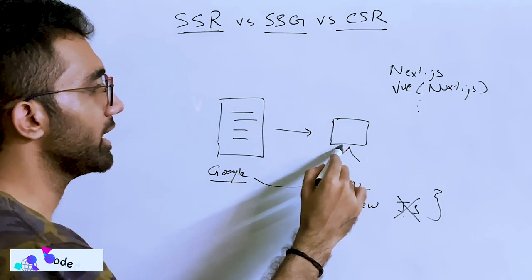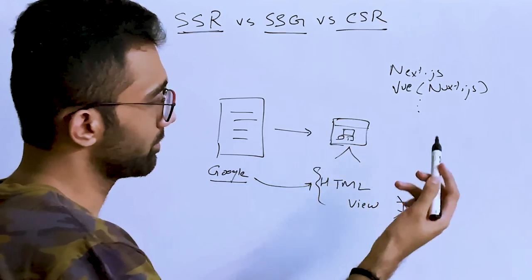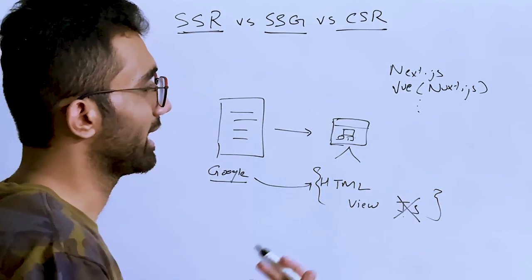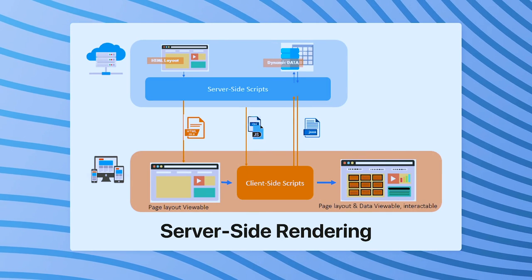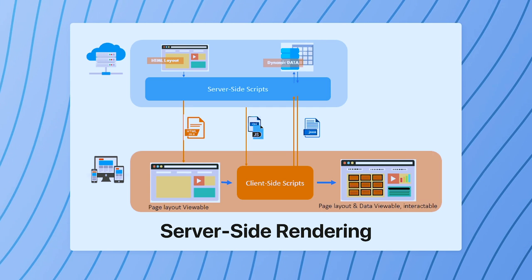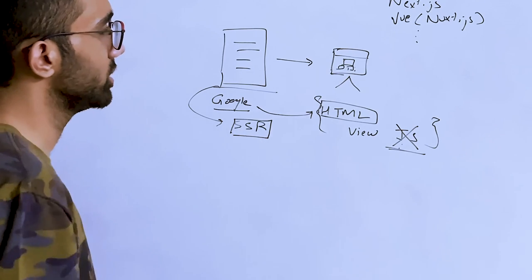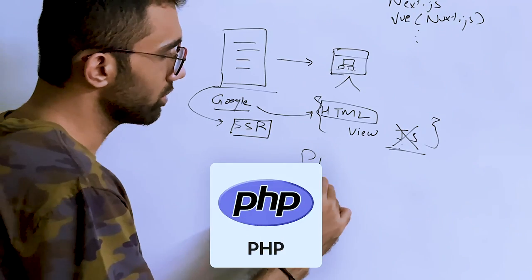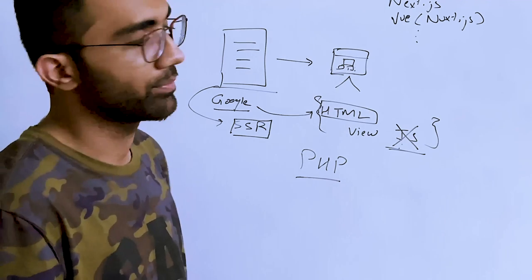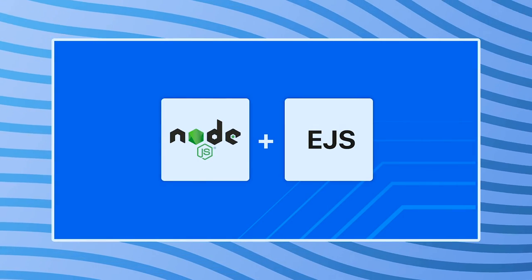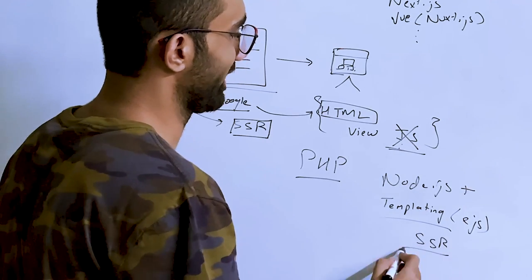If a full HTML page is delivered and JavaScript is not required for viewing, you're using server-side rendering — rendering the full page on the server. This is what PHP was doing in the old days, and still does. In Node.js, using a templating engine like EJS is also referred to as server-side rendering.